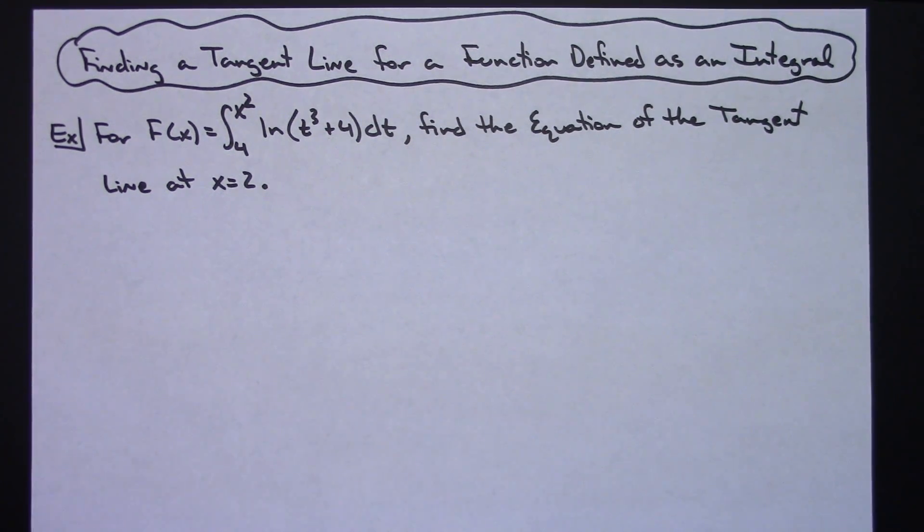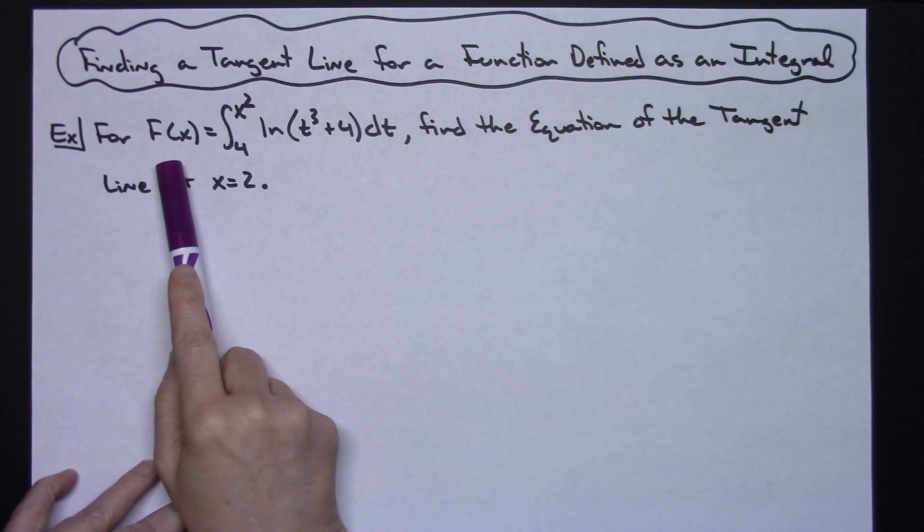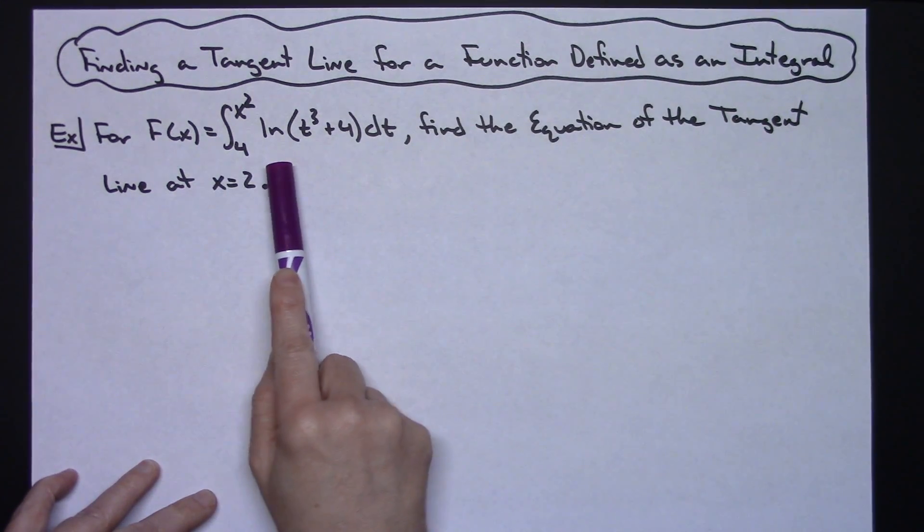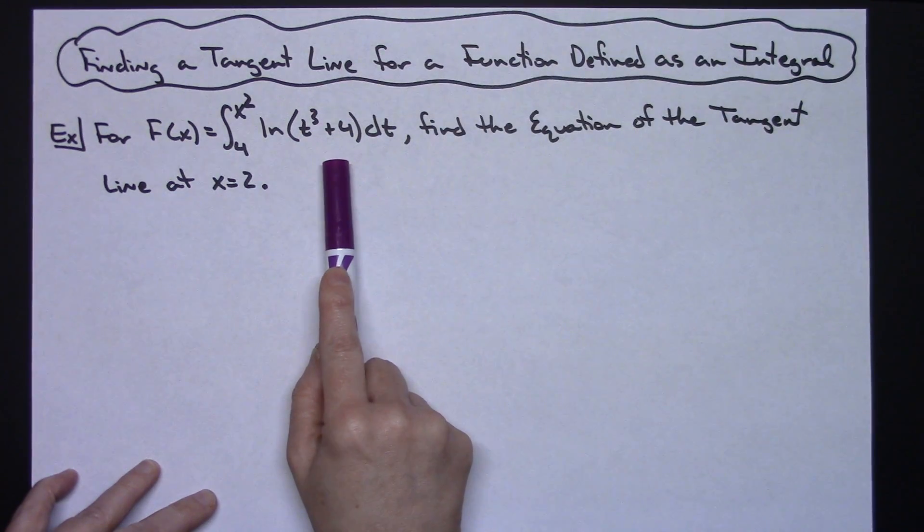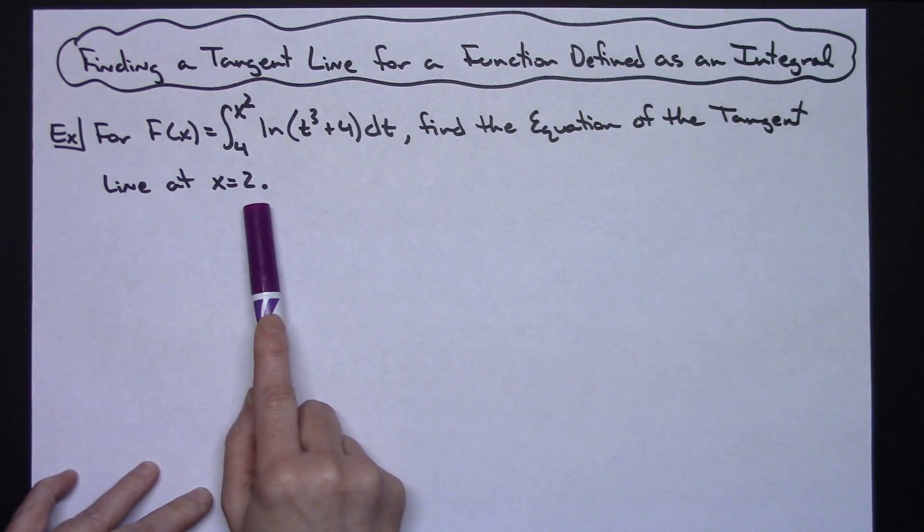In this video I'm going to find the equation of a tangent line for a function that is defined as an integral. So we've got capital F of x is equal to the integral from 4 to x squared of the natural log of t to the third plus 4 dt. And we want to find the equation of that tangent line at x equals 2.